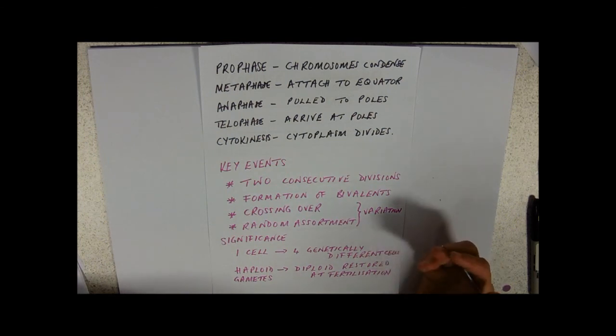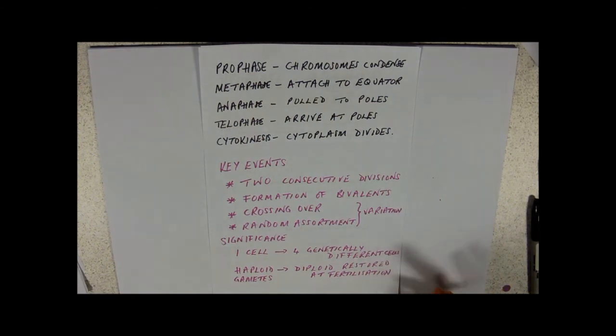So, remember that particularly in humans, really complicated, we've got 23 pairs of chromosomes. It would be no use if all your paternal chromosomes, the ones you'd inherited from your dad went into one, and all your mums went into another gamete. So, you're going to shuffle those chromosomes up through this process of random assortment.